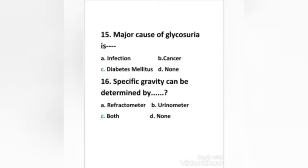Next question: major cause of glycosuria is: infection, cancer, diabetes mellitus, or none. Right answer is option C, diabetes mellitus.